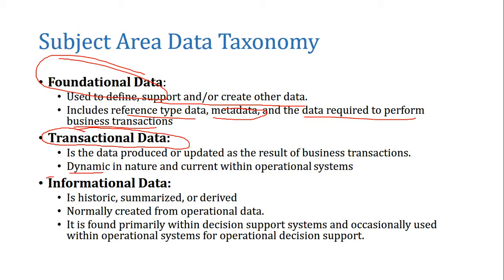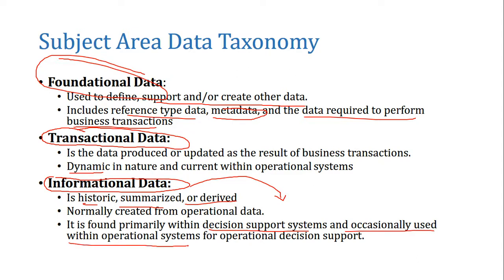The third category is informational data. Informational data is primarily historic, summarized, or derived data. It is created from operational or transactional data and is used primarily for decision-making purposes. It is used by decision support systems and occasionally within operational systems for operational decision support.